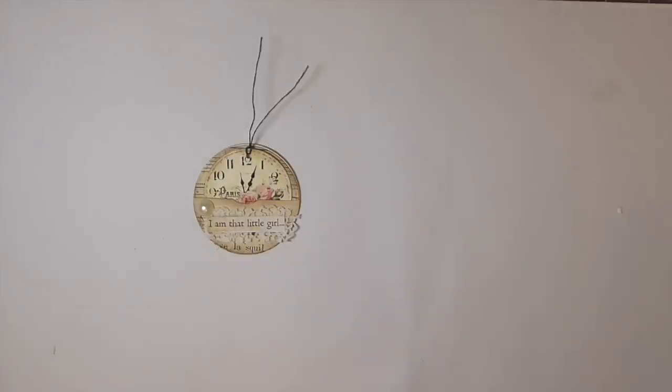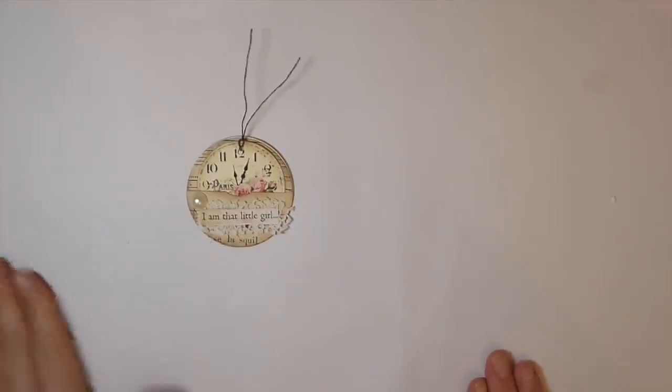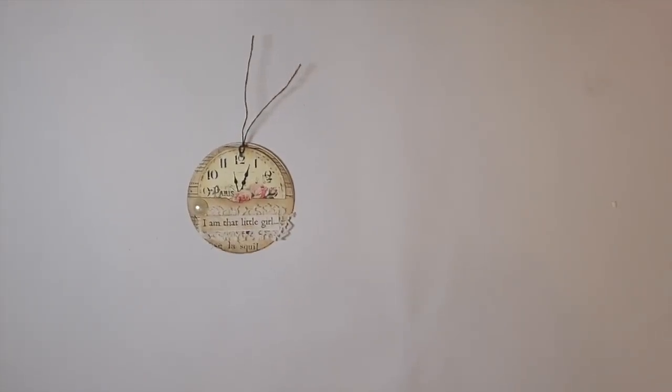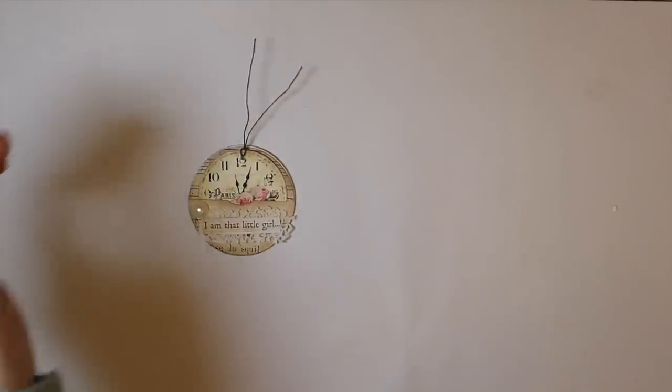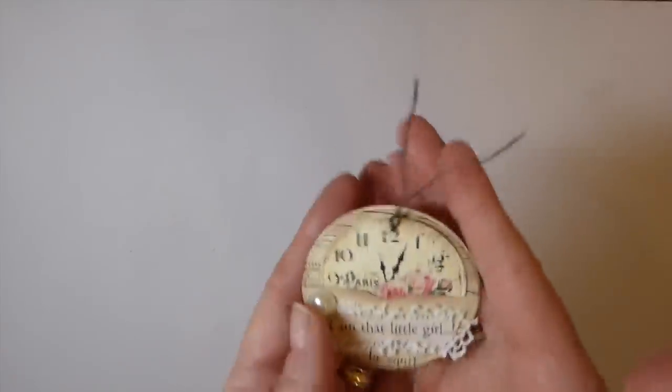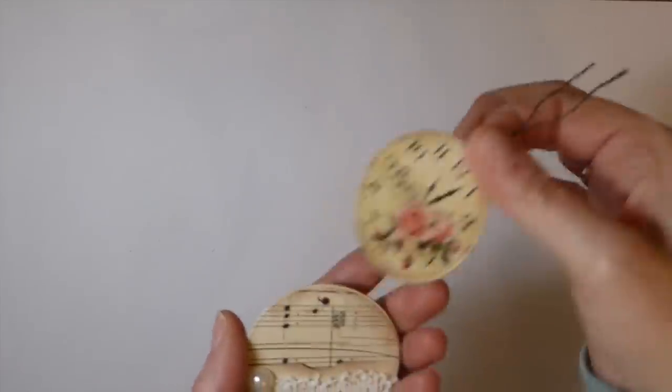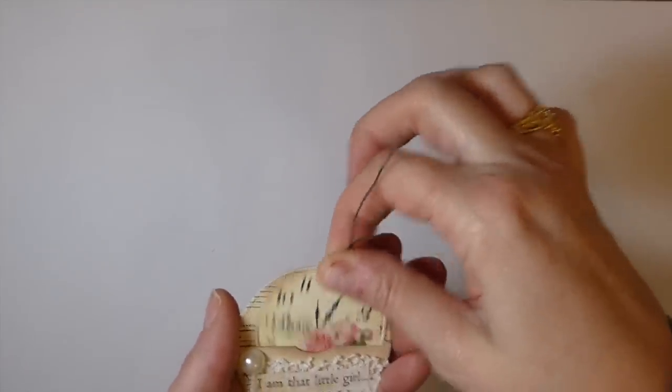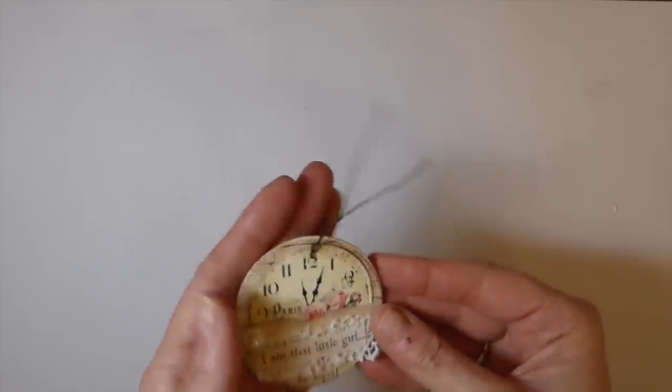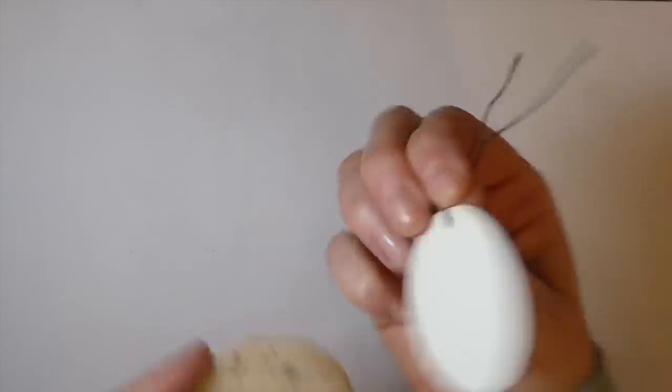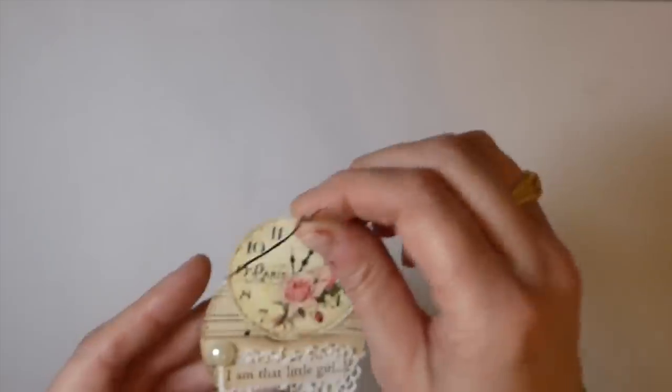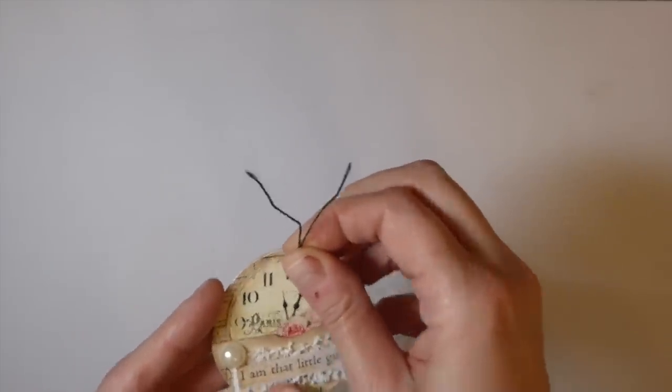Hey everybody, welcome back. We are on day 10 of the 100 day project. So today I thought we'd make some of these little circle tags for journals. I mean these would just be cute as just a little gift tag. You could put to and from on the back there. So there's other uses for this. It doesn't have to just be junk journals.